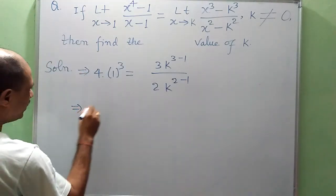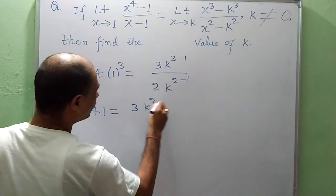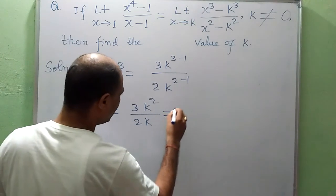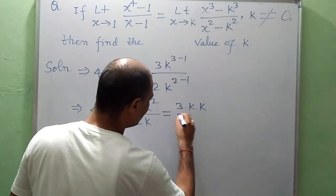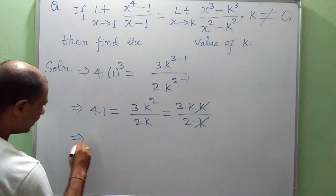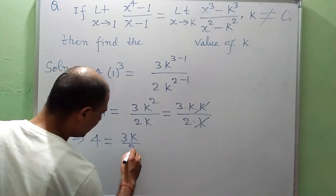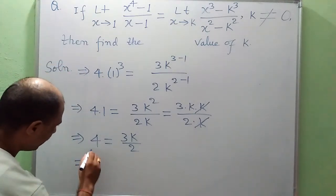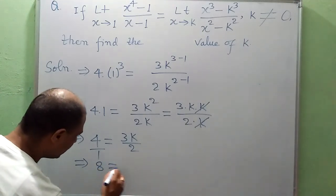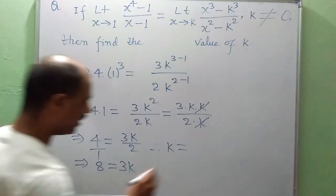This implies that 4 into 1 equals 3k squared divided by 2k. We can simplify: 3 times k times k, divided by 2 times k — the k cancels. So this gives 4 equals 3k by 2. By cross multiplication, 8 equals 3k. Hence, k is equal to 8 by 3.